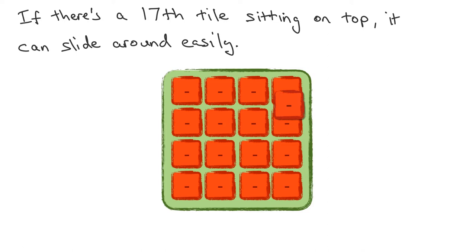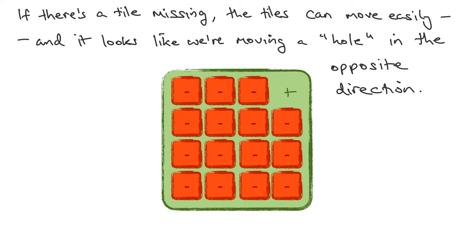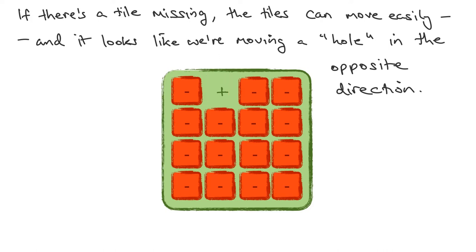Now let's imagine that we haven't got one extra tile, we've got one fewer tile. And so there's a hole there, and the backing plate here has a positive charge. You can see the plus there showing the hole where there's a missing tile. Now that there's a missing tile, the tiles can move. And if you look at it just right, those tiles moving — well, they look a little bit like that hole is moving to the left. If the tiles are moving to the right, the hole is moving to the left.